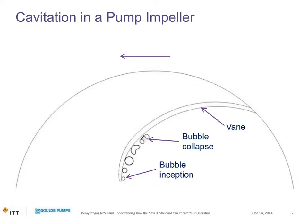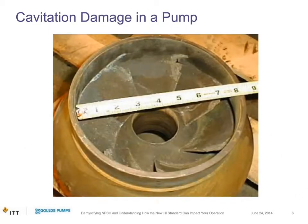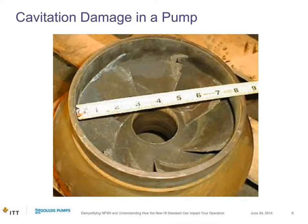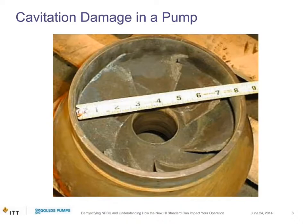Here is an example of severe cavitation damage on an impeller. Looking at the vane adjacent to the tape measure, you can see the vane towards the shroud is basically totally eaten away — it's actually not there anymore. This is what we'd classify as a severe failure, where cavitation has gone all the way through the thickness of the vane. Damage can vary; sometimes you get light frosting that still constitutes cavitation damage but hasn't damaged as much.